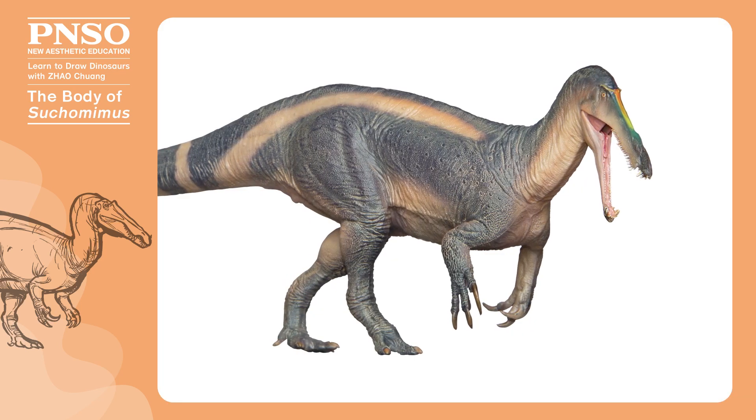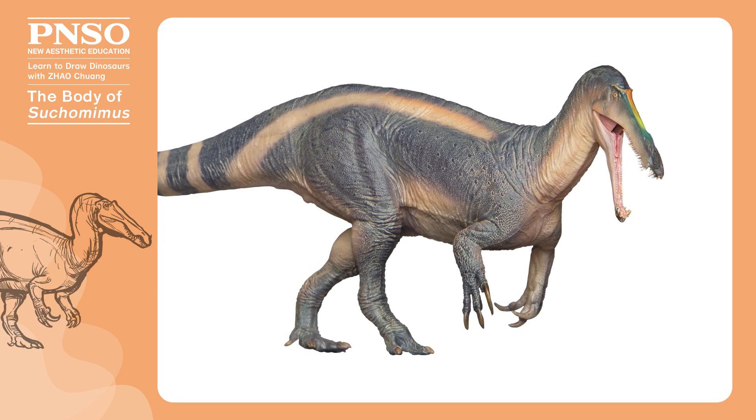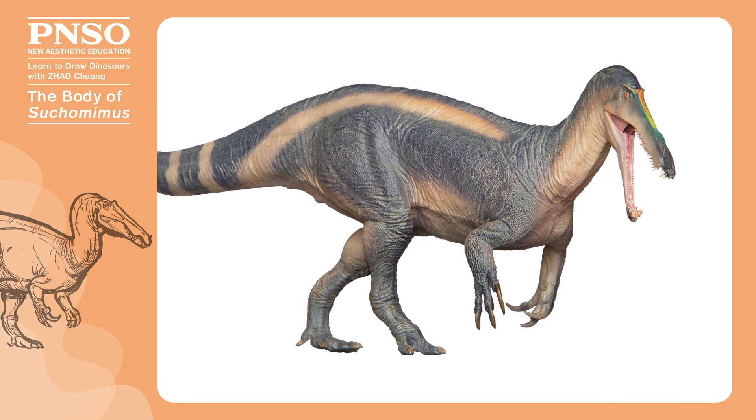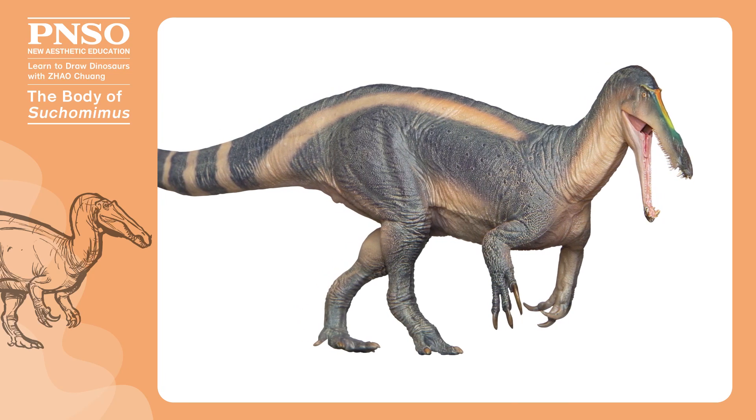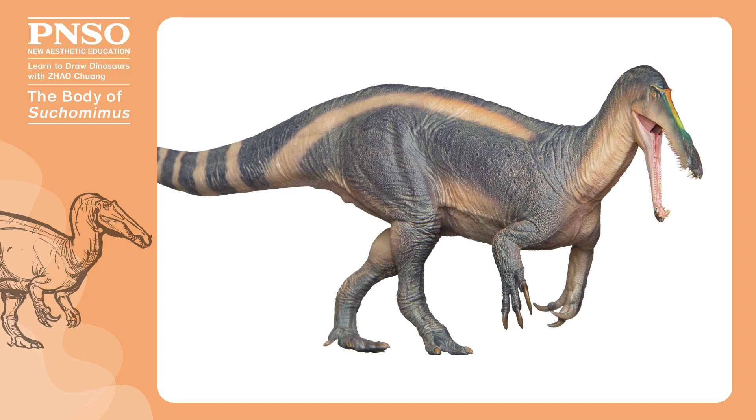The body structure of Suchomimus was not like that of its relative, the spinosaurus, but more like dinosaurs that walked on land. It had slender hind limbs. Although its forelimbs were huge, it did not use them when walking.